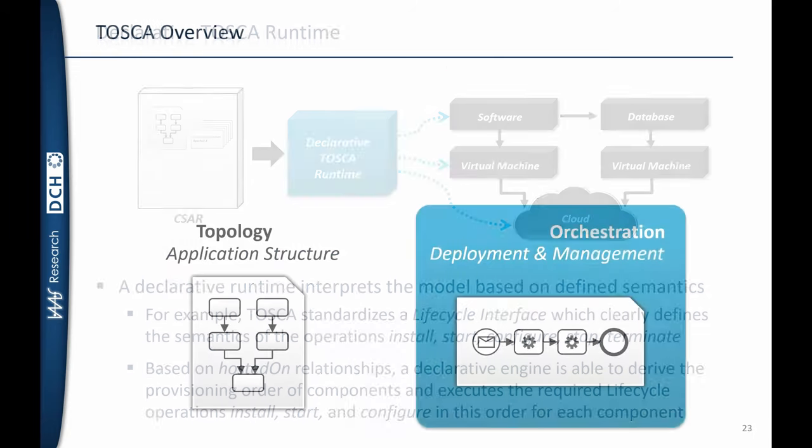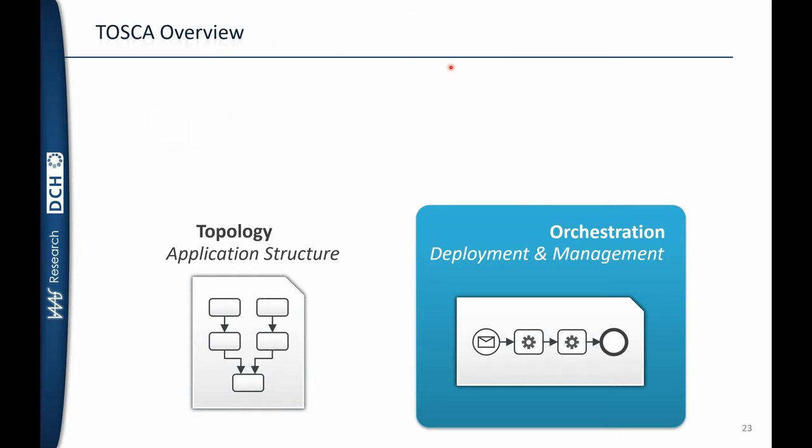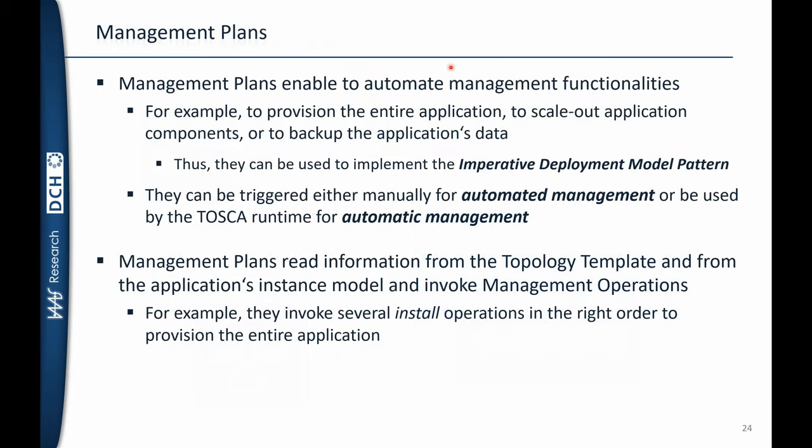If we require a specific order that must always be executed, we have to go to the orchestration layer of TOSCA. In that orchestration layer, we can explicitly define the steps that have to be executed and the order in which they execute — these are called management plans. We can define all the operations needed to deploy the application, and also perform other management operations such as backing up data or scaling out an application.